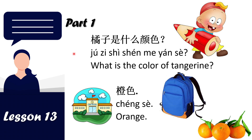The first one: 橘子是什么颜色. The meaning of 橘子是什么颜色 is 'What is the color of tangerine?' The answer 橘色 means orange.